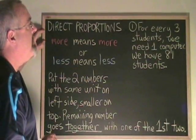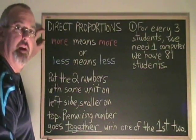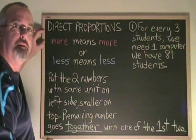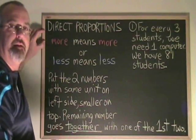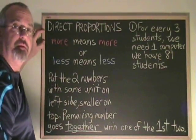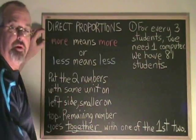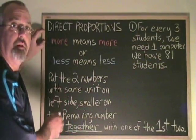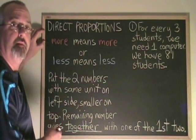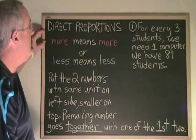For every three students, we need one computer. We have 81 students. This type of problem can be easy to figure out just using logic, but you have to show your work in math. So building the proportion is the way of making the equation and showing your calculations.